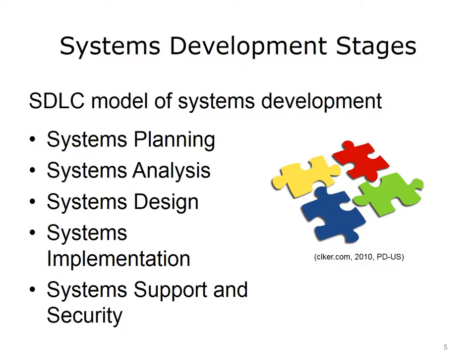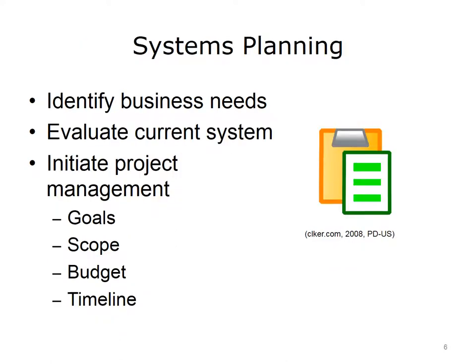Over the next few slides, we will explain each of these stages. The first activity, systems planning, involves the initiation of the information system project. It starts with identifying the business needs that the system will address. If a new information system is to replace an existing one, then the current system is evaluated to determine to what extent it is already meeting or not meeting the business needs. Anything that is missing will potentially be part of the new system. At this point, the project begins and standard project management goals are determined. The ideas for the new system are narrowed down to a set of features. The budget for the project is set, along with an initial timeline of development.